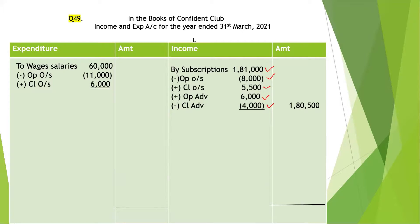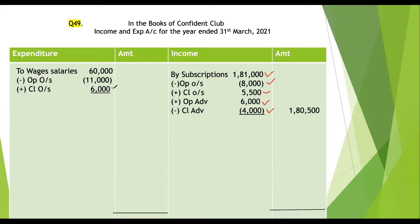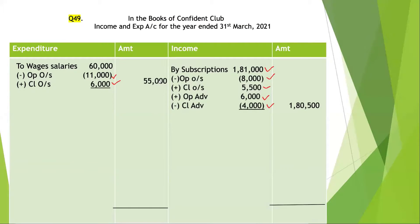The outstanding amount of salaries is rupees 6,000, which is closing outstanding and will be added as it relates to the current year. The opening outstanding balance of salary given in the opening balance sheet is rupees 11,000, which will be subtracted. So the final amount to be reflected in the Income and Expenditure account as salaries is rupees 55,000.